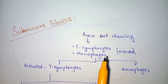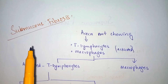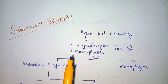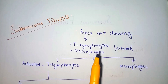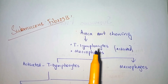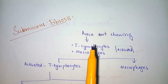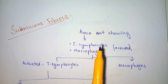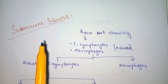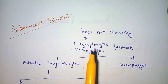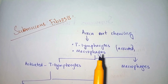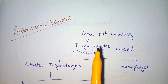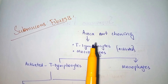In this video, I will explain the pathogenic mechanism involved in the formation of submucous fibrosis. In most cases, the etiological factor involved in this fibrosis is the chewing of the areca nut. How areca nut chewing causes fibrosis in the oral cavity is what we will cover here. So let's start — whenever we chew areca nuts, we take them in the form of paan.